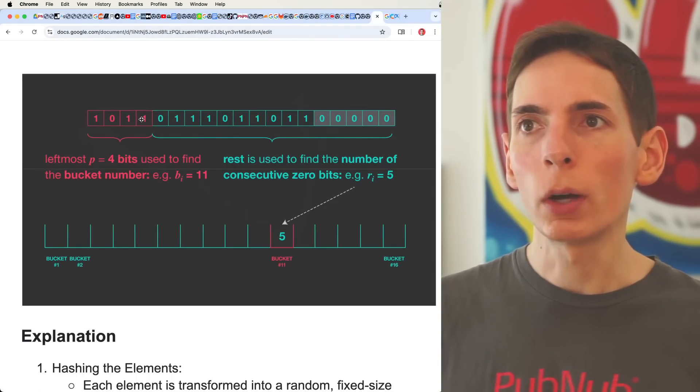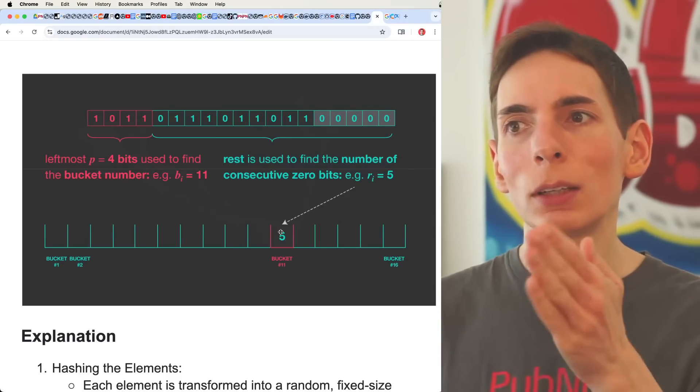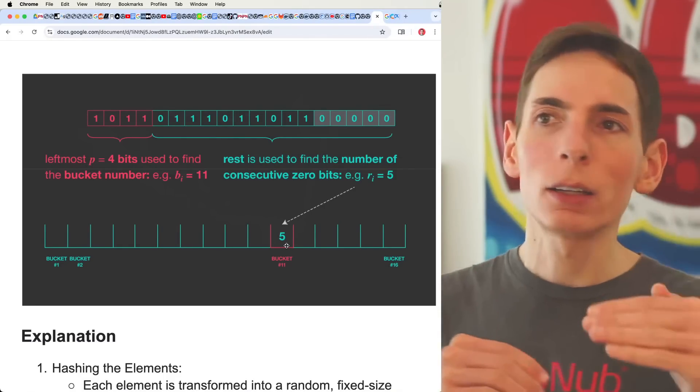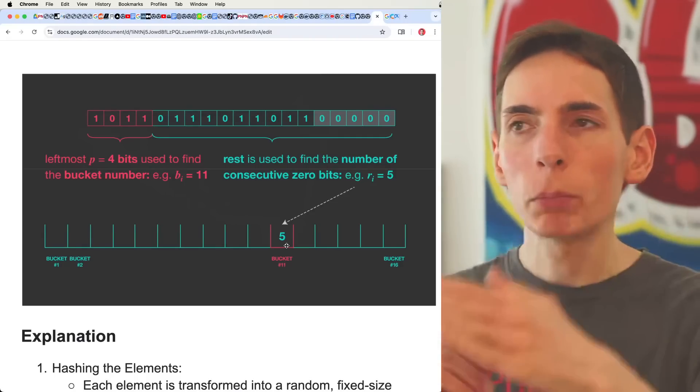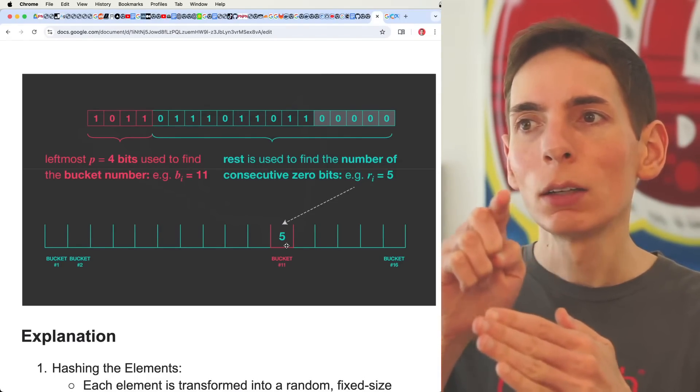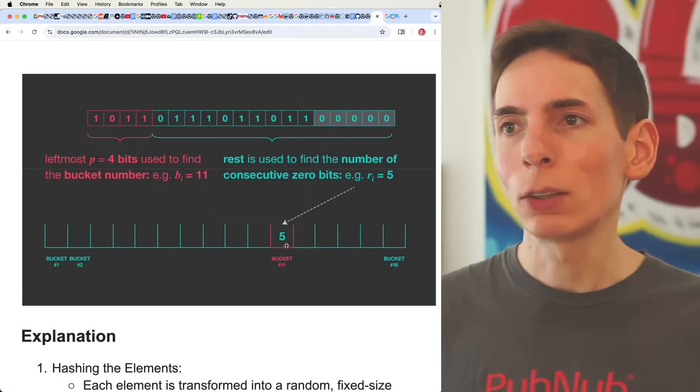Because 1011 actually ends up being 11. And so that's where that value goes. The next time we add another element, we go through the same process. If it ends up in the same bucket, we count the zeros again. And then if the number is larger, we just overwrite that number. If it's not larger, then it just stays the same.